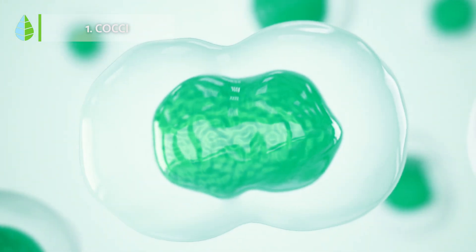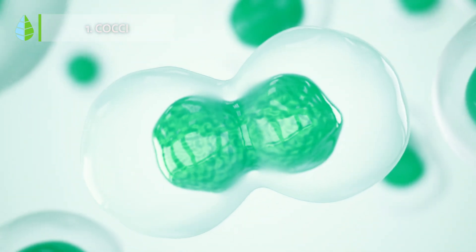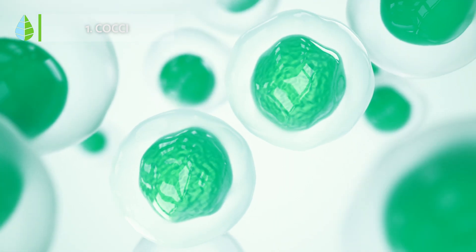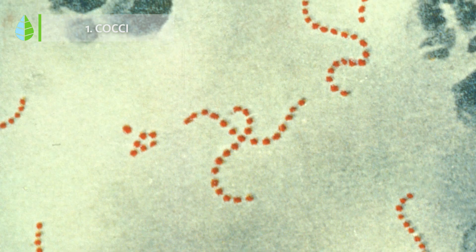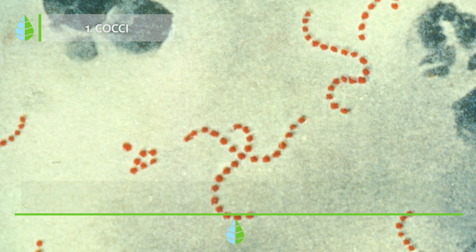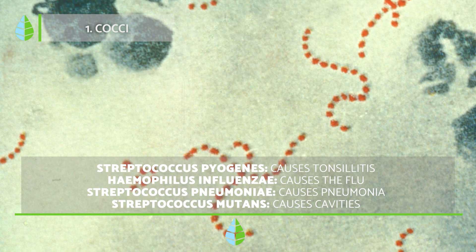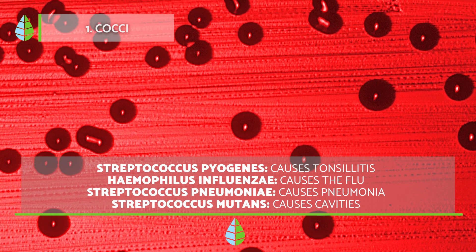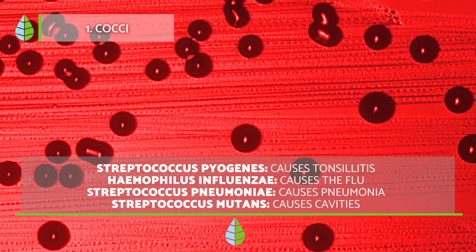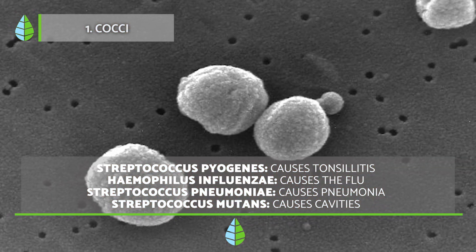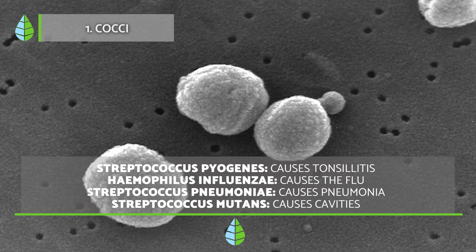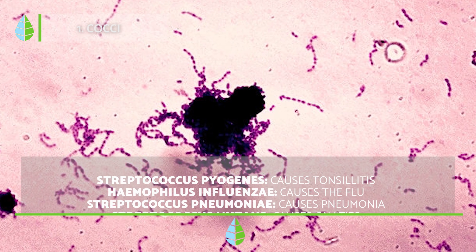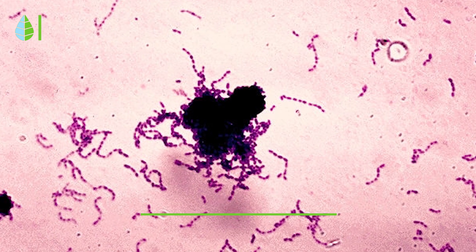Here are some examples of cocci bacteria known for the diseases they cause: Streptococcus pyogenes causes tonsillitis; Haemophilus influenzae causes the flu; Streptococcus pneumoniae causes pneumonia; and Streptococcus mutans causes cavities.